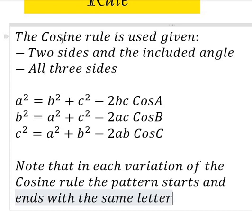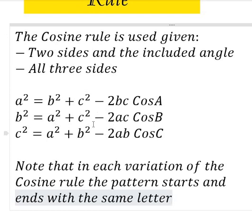If you have not seen our last video on the sine rule, please check this YouTube channel. Take note: in each variation of the cosine rule, the pattern starts and ends with the same letter. It starts with a and ends with A, starts with b and ends with B, starts with c and ends with C. This is the formula you will use whenever applying the cosine rule.